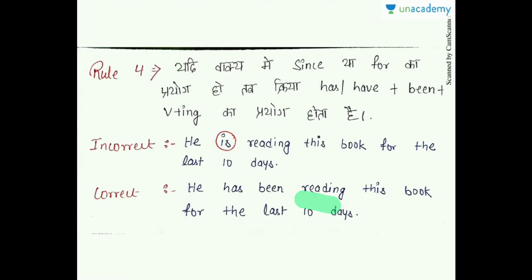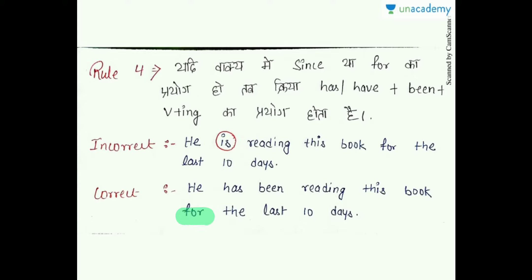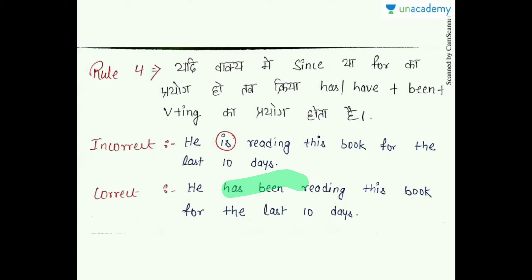If 'since' or 'for' is used in a sentence, pay attention — this is a minor rule you may have studied in tenses. When 'since' or 'for' is used, then 'has been' with the '-ing' form is used. For example: 'He is reading this book for the last 10 days' is wrong. Note that 'last' takes 'since', but 'the last' takes 'for'. The correct sentence is: 'He has been reading this book for the last 10 days.'